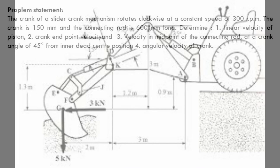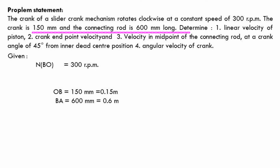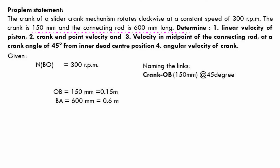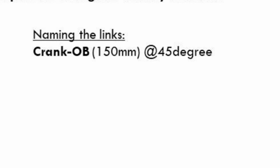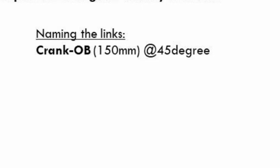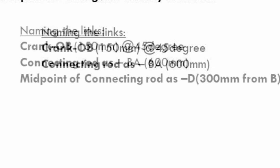Let's see one example problem. The crank of a slider crank mechanism rotates clockwise at a constant speed of 300 RPM. The crank is 150 mm and the connecting rod is 600 mm long. Determine the linear velocity of the piston, crank endpoint velocity, velocity at the midpoint of the connecting rod at a crank angle of 45 degrees from inner dead center, and angular velocity of the crank. For better understanding, I am giving some naming: crank OB = 150 mm, connecting rod BA = 600 mm, and midpoint of the connecting rod is D, at 300 mm from point B.